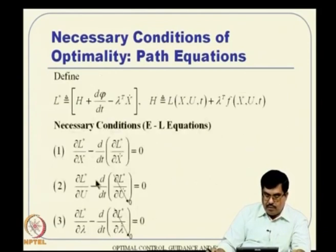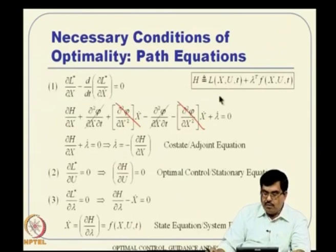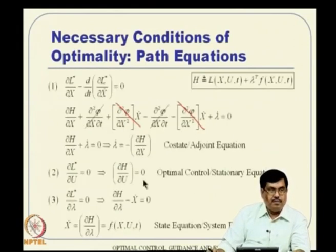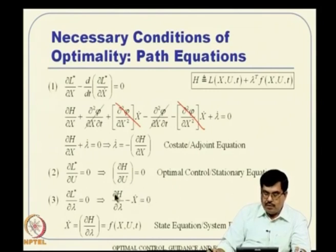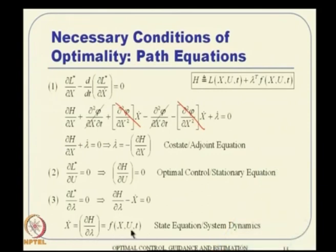The second necessary condition: del L-star / del u = 0 gives del H / del u = 0, since u appears only in the Hamiltonian. The third condition: del L-star / del lambda = 0 gives del H / del lambda − x-dot = 0, meaning x-dot = del H / del lambda = f(x, u, t), which is simply the state equation.